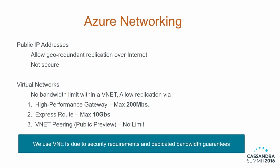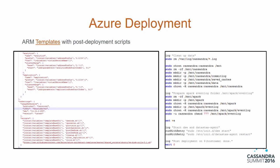To get high-performing networking, Azure has two options: public IPs and private virtual networks. Public IPs are great because they give you geo-replicated replication over the internet, but they are not as secure. VNets give you amazing bandwidth guarantees and low latencies, and they are also more secure. At Office 365 we have very strong security requirements, so we picked VNets for our networking needs.